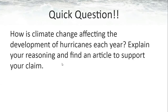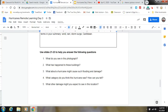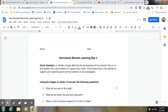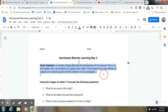Quick question: how is climate change affecting the development of hurricanes each year? Explain your reasoning and find an article to support your claim. You should be able to do this in about a paragraph. In the Google slide there will be a timer — I'll give you about 10 to 15 minutes. You can pause the video and use the timer to answer this question using today's document, titled Remote Learning Day 3. Is climate change affecting the development of hurricanes? Yes or no — explain why, use evidence, and find at least one to two articles to cite in your paragraph.